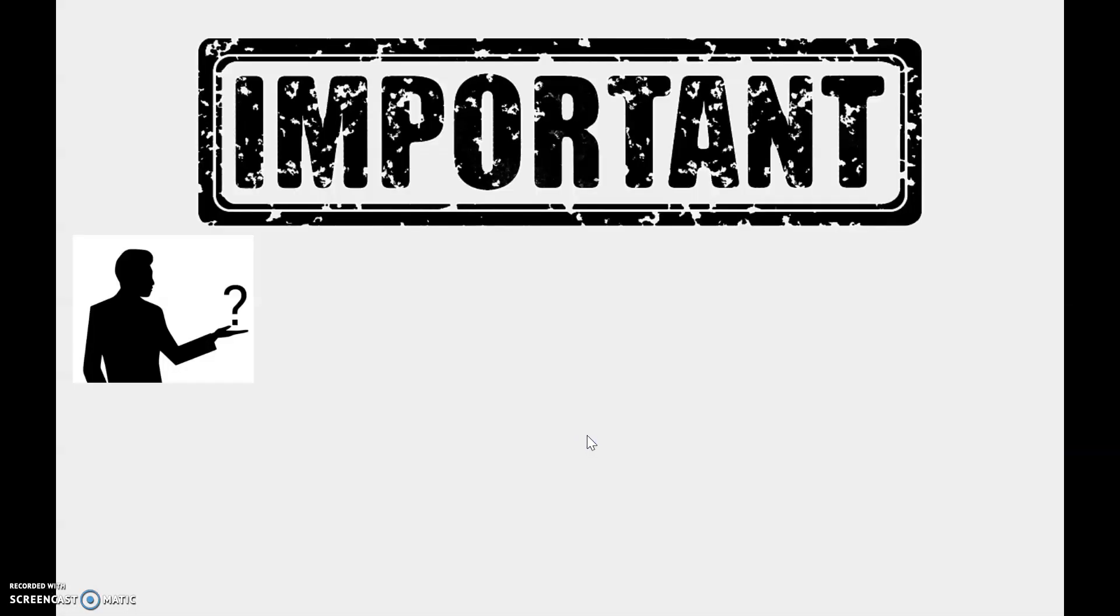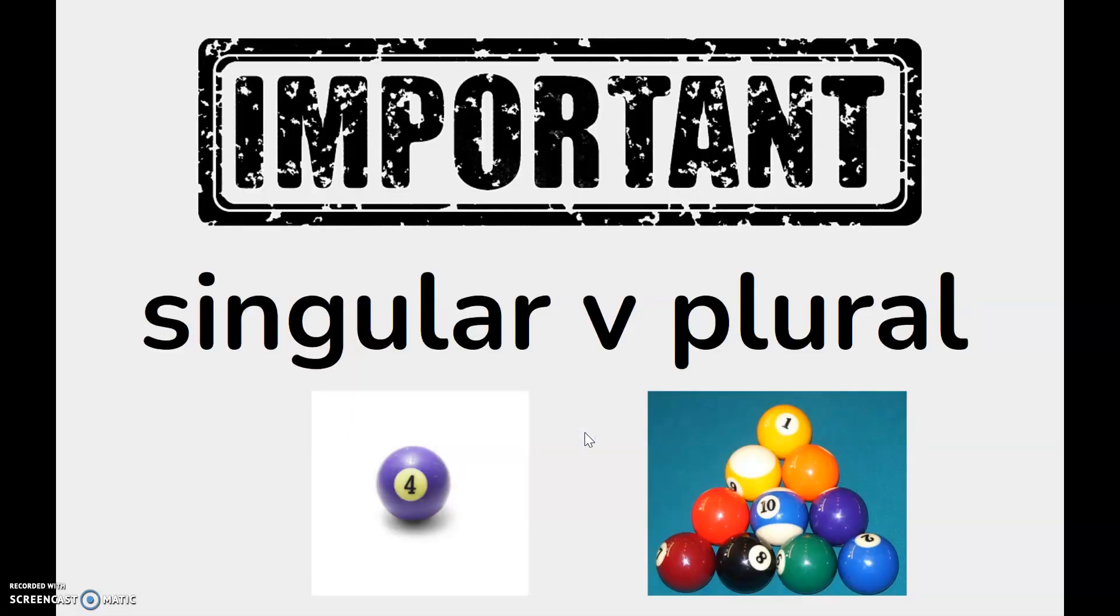Before you start, something very important to understand about this and that, these and those. We need to understand singular and plural. Singular is when we talk about a singular item, one, and plural is when we have more than one.